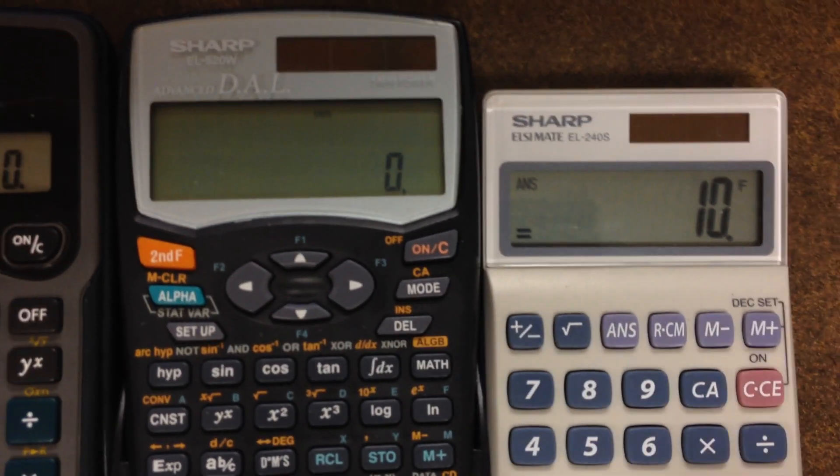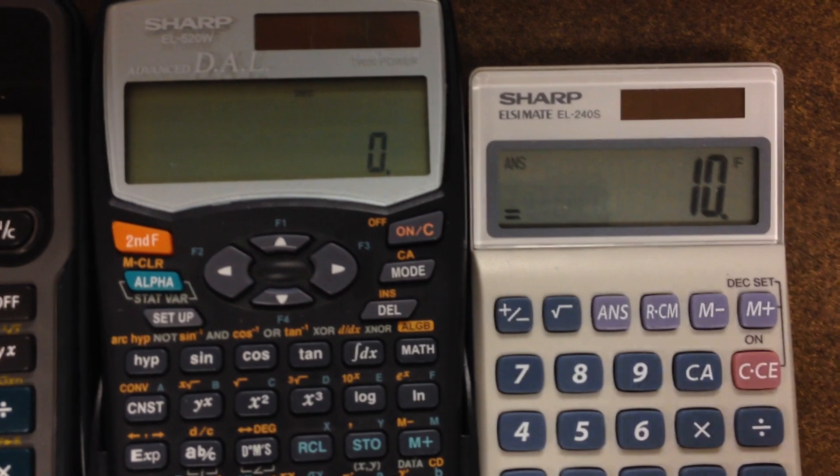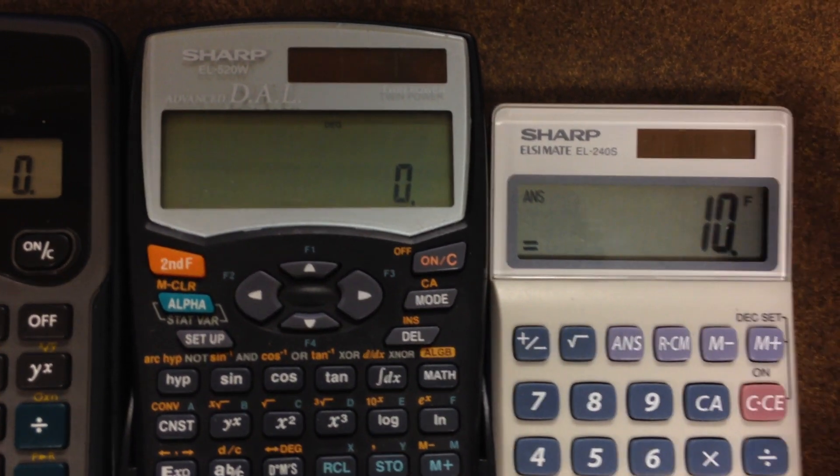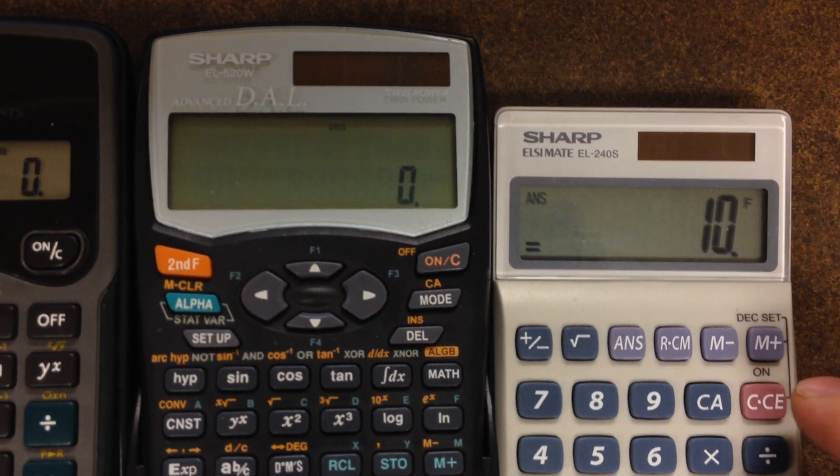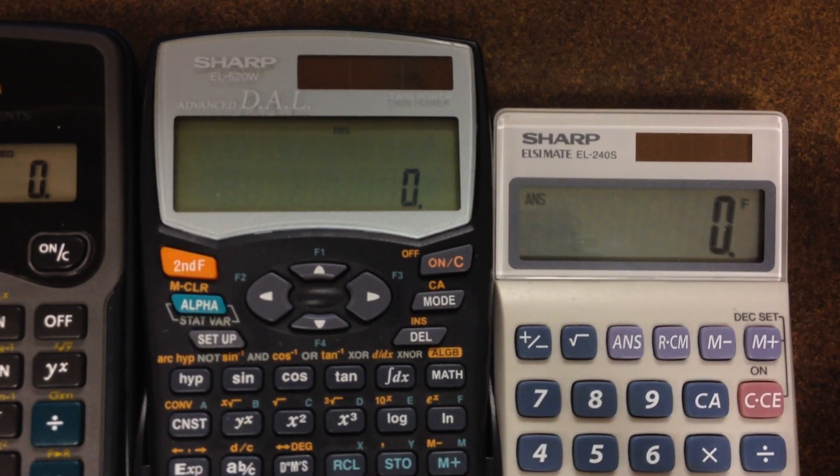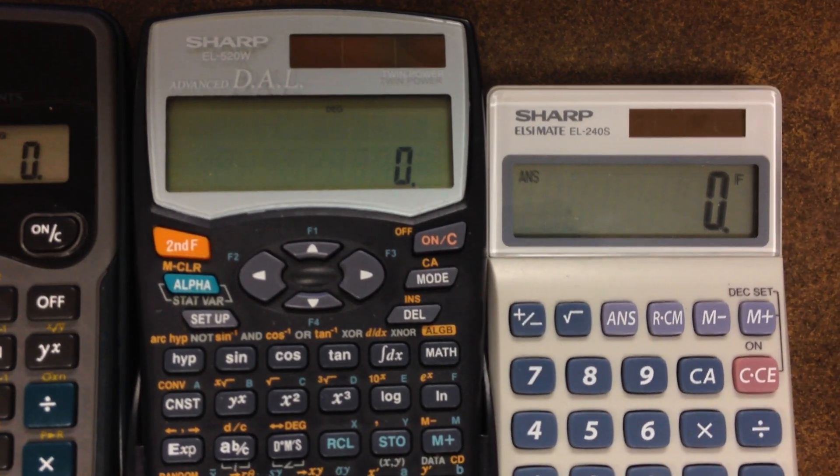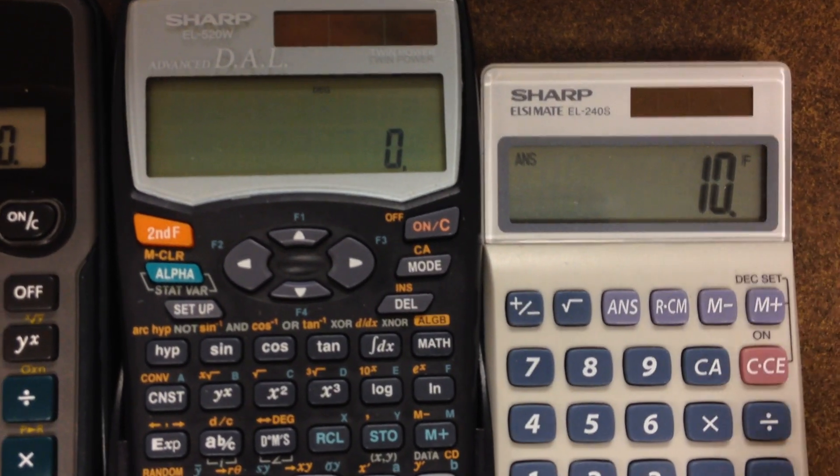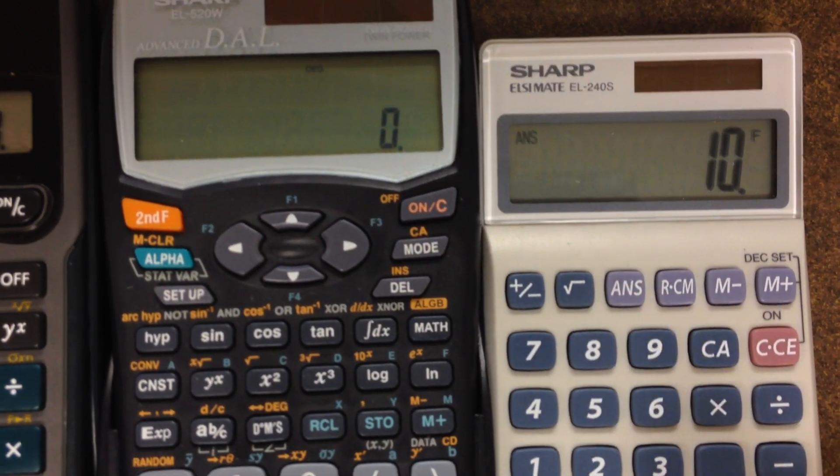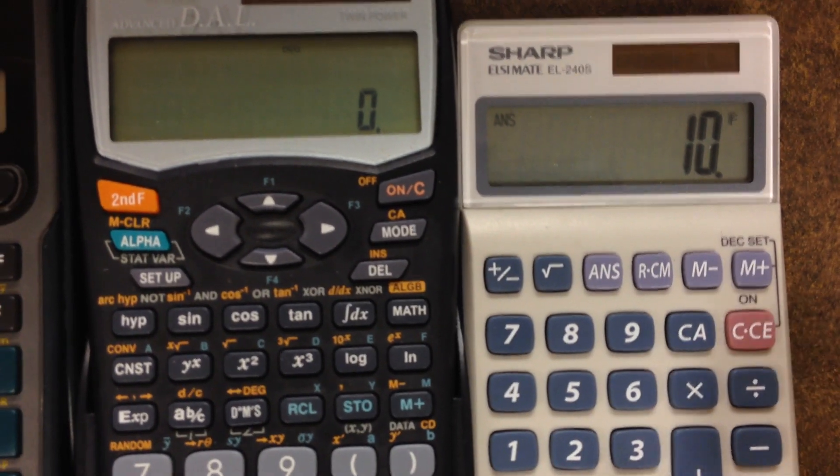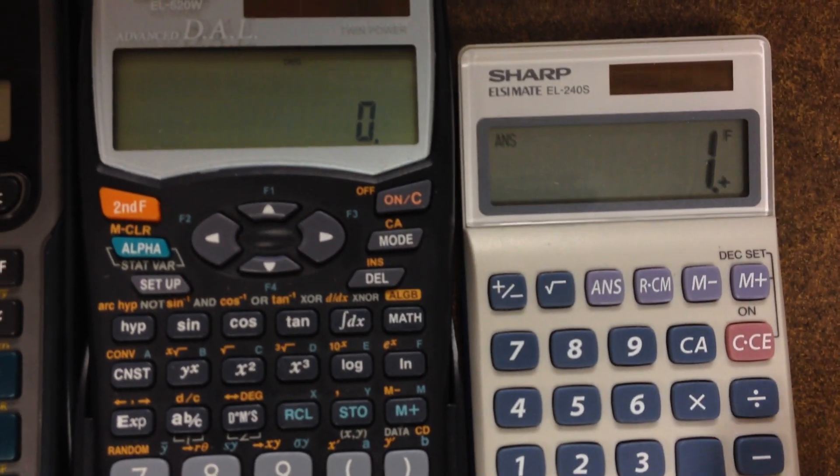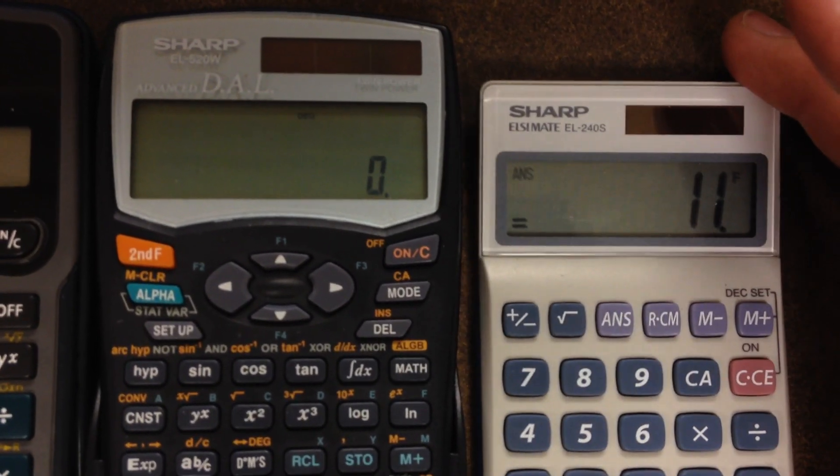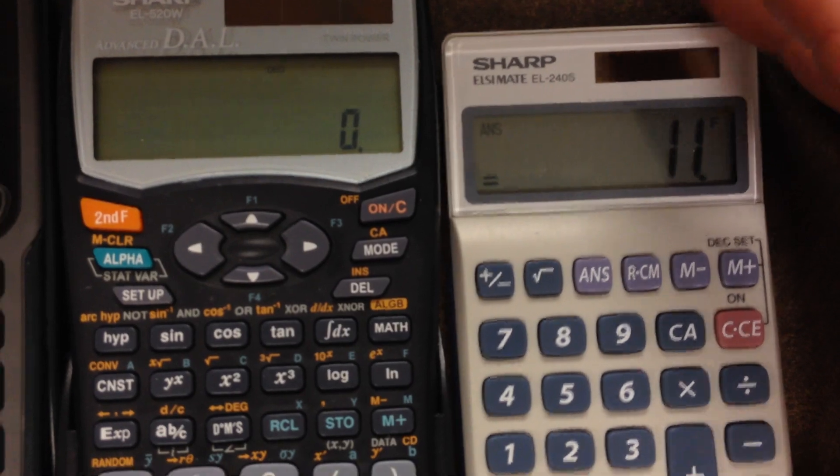And if you want to work with that 10, oh, I forgot to add one more thing to it. What do I do? So on this particular model, if you press CE, the last entry, the 10, disappears from the screen, but the last answer memory, 10, is in it. So you can press ANS answer button, and then 10 plus 1. There we go, 11. So that's how the circuitry works on this calculator.